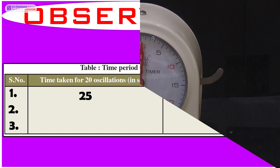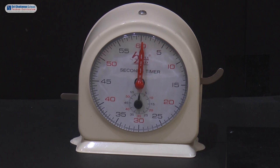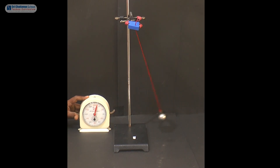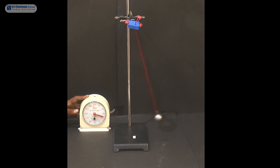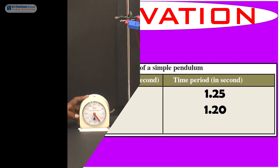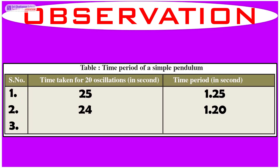The second time taken for 20 oscillations — counting: 1, 2, 3, 4, 5, 6, 7, 8, 9, 10, 11, 12, 13, 14, 15, 16, 17, 18, 19, 20 — is 24 seconds, and the time period is 1.20 seconds.